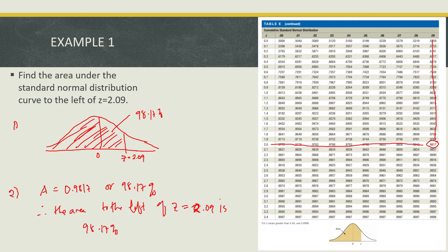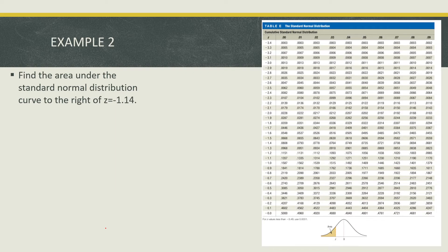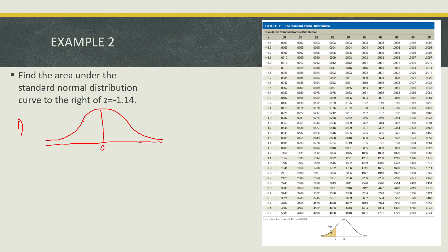Example number two: find the area under the standard normal distribution curve to the right of z equals negative 1.14. First, draw the standard normal distribution curve with zero at the center and z equals negative 1.14 to the left. This is case two — area to the right of z — so we find the area of negative 1.14, then compute 1 minus that area.